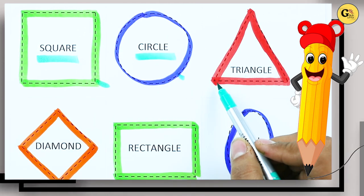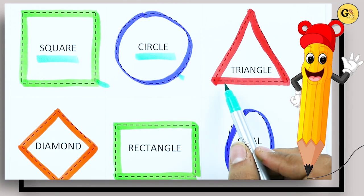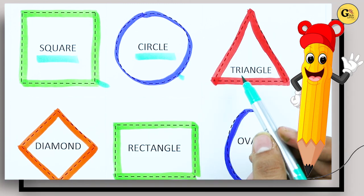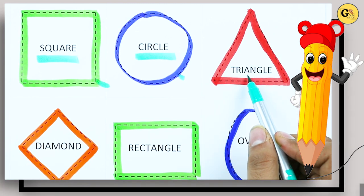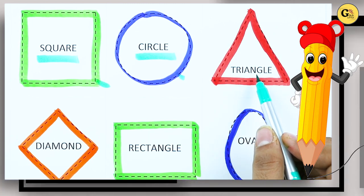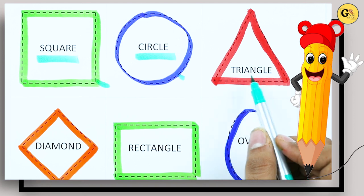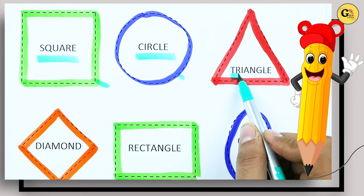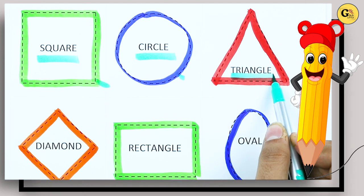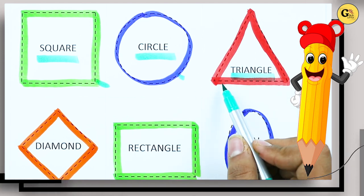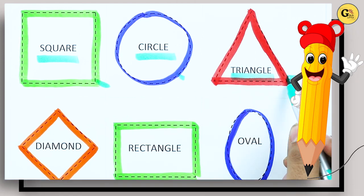Which shape is this? Triangle. T-R-I-A-N-G-L-E. It's a triangle with red color.